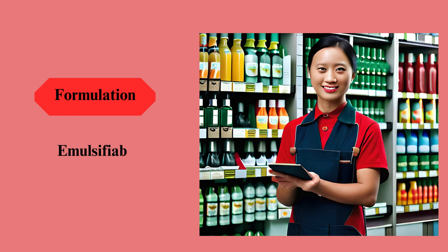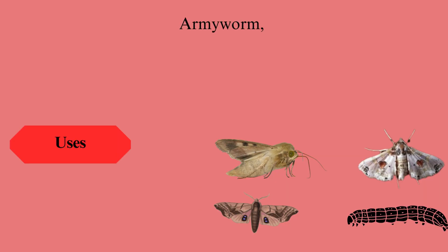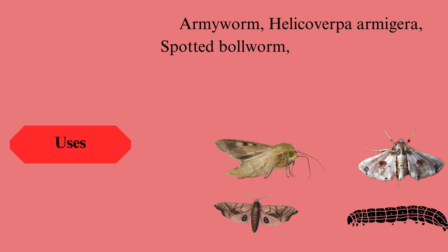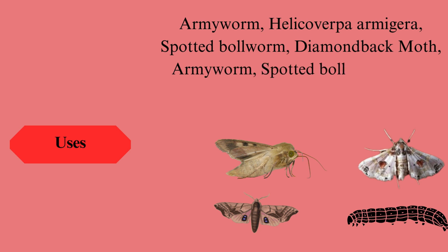Formulation. Abamectin is commonly formulated as a concentrated emulsifiable concentrate. Abamectin is widely used as an insecticide and acaricide to control various pests in agriculture, horticulture, and ornamental plants.